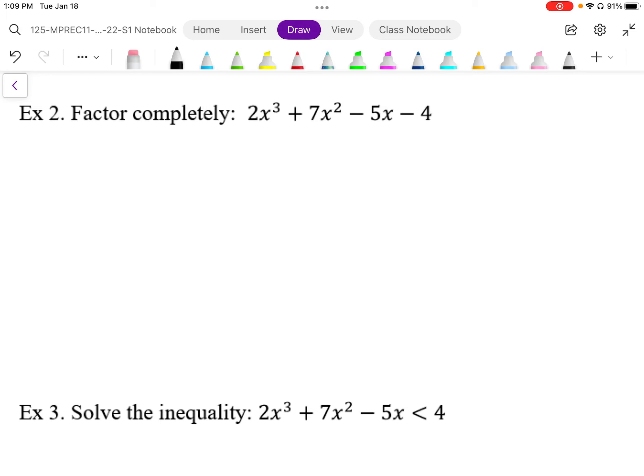In this case here, to figure out my factor, I need to use the remainder theorem, and the possible factors are going to be based on these two parts here. So my possible factors are going to be plus minus 1, 2, 4 from the negative 4. But we also have the rational factors, which are going to be 1 divided by 2, 2 divided by 2, 4 divided by 2.